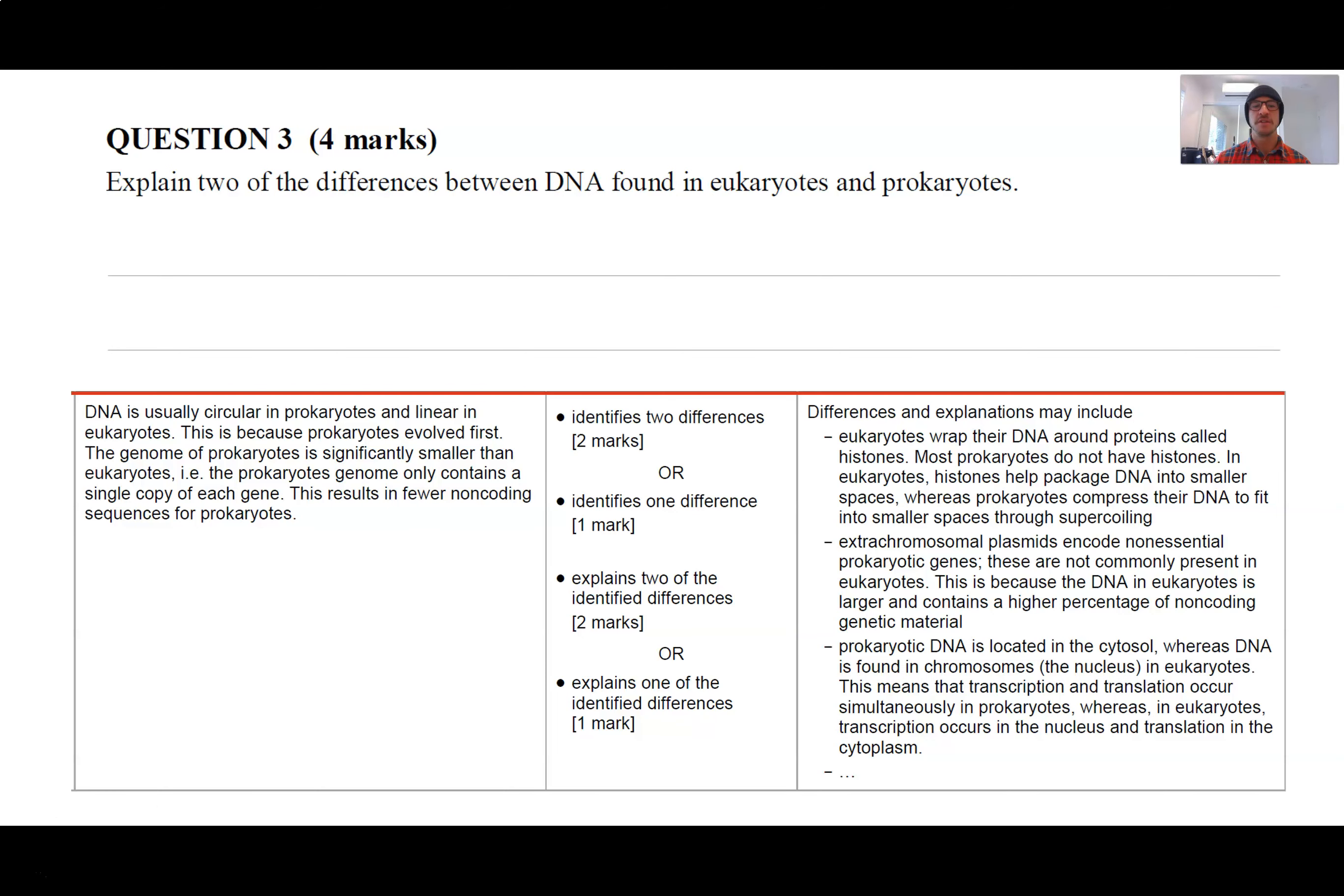Okay. This is the QCAA response. So they've come up with a couple of thoughts here and the marking scheme, but there's also many other type of responses that you may include. So I will just look at a couple of these. Maybe you said that in eukaryotes, our DNA wraps around proteins called histones. Most prokaryotes do not have histones. In eukaryotes, histones help package DNA into smaller spaces, whereas prokaryotes compress their DNA to fit into smaller spaces through supercoiling. Another response that you might have said was prokaryotic DNA is located in the cytosol, whereas DNA is found in chromosomes in the nucleus in eukaryotes.